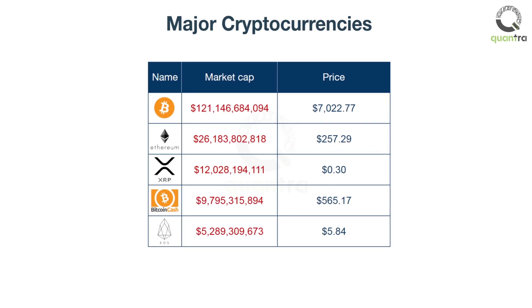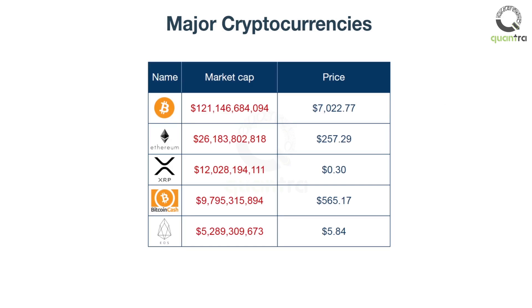There are many cryptocurrencies, or coins as they are sometimes called, in the market. The current top 5 cryptos by market cap are shown here. There are more than 200 cryptocurrencies in vogue. Since cryptocurrencies are one of the most volatile markets, these rankings might keep changing.